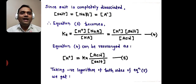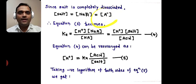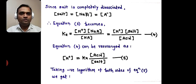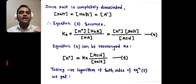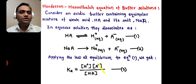Now, since the salt is completely dissociated, the molar concentration of salt NaA is equal to the molar concentration of anion A⁻. Therefore, equation 3 becomes: Ka = [H⁺][NaA] / [HA]. So instead of A⁻, we write NaA, and all other things remain as they are. This is equation 4.